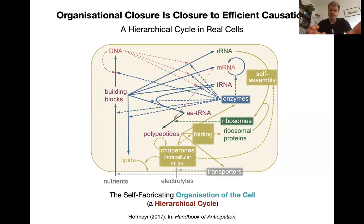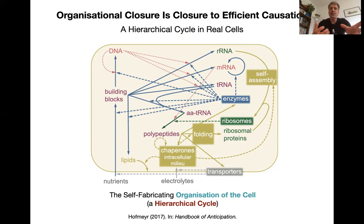In particular, the enzymes and ribosomes that produce intermediary metabolism and macromolecular synthesis; the cellular milieu that allows proteins to fold and self-assemble into ribosomes and enzymes in their functional form; and the transporters at the cell membrane that regulate and generate the stable intracellular milieu. At least one of those efficient causes — the intracellular milieu — is a function of the entire organization of the cell.